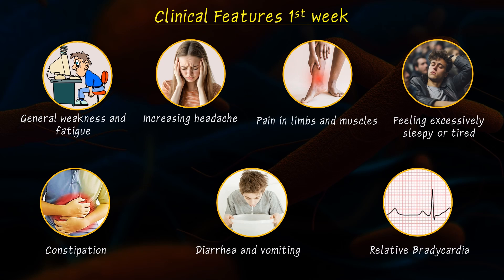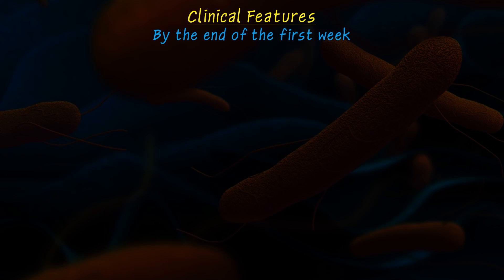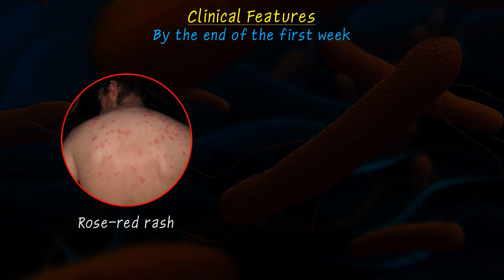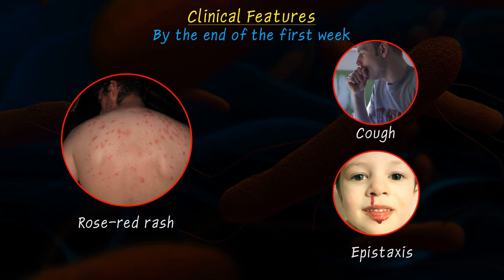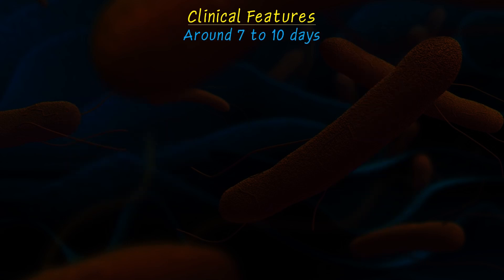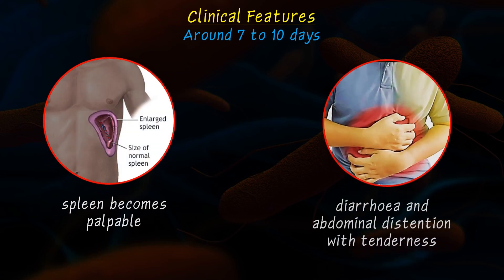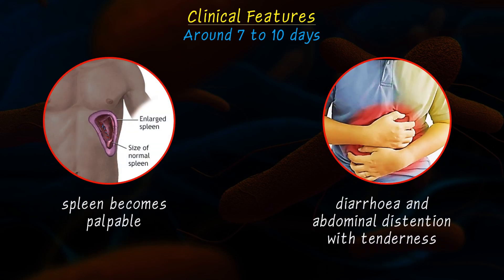By the end of the first week, a rose-red rash may appear on the upper abdomen and back, along with cough and epistaxis. Around 7 to 10 days, the spleen becomes palpable, and constipation is followed by diarrhea and abdominal distension with tenderness.